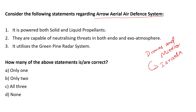Now let us look into the MCQ on the Aero aerial defense system. Statement one: it is powered by both solid and liquid propellants — this is wrong, it uses solid propellant only. Statement two: it is capable of neutralizing threats both in endo and exo atmosphere — correct. Statement three: it utilizes the Green Pine radar system — absolutely right. So two statements are correct, the answer is B: only two.